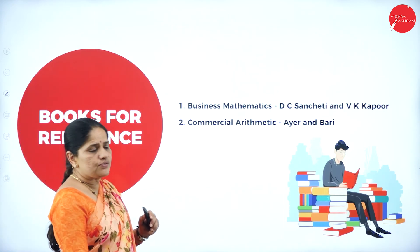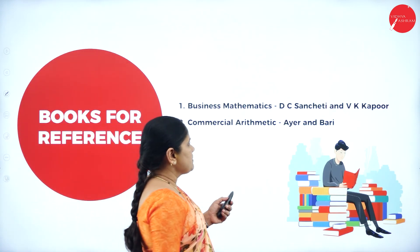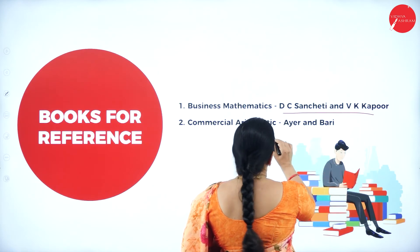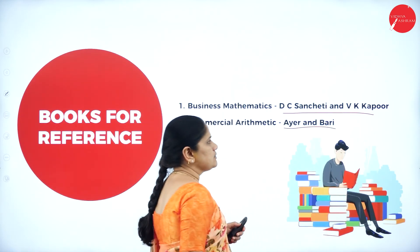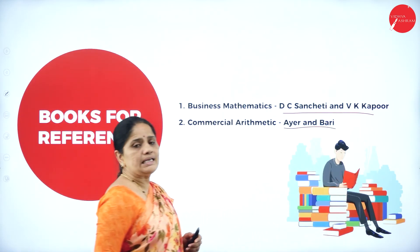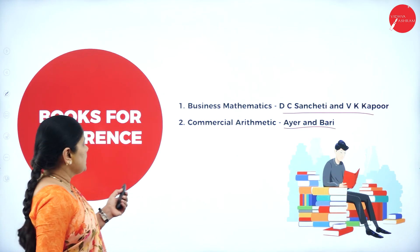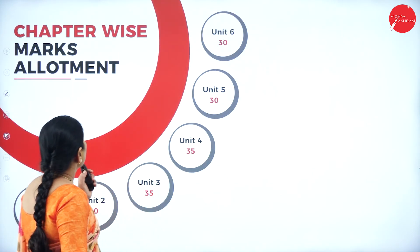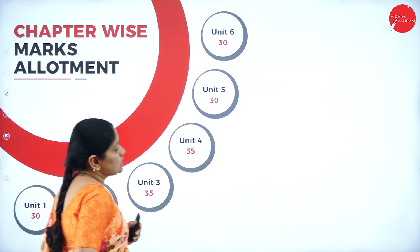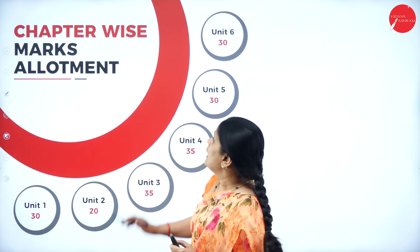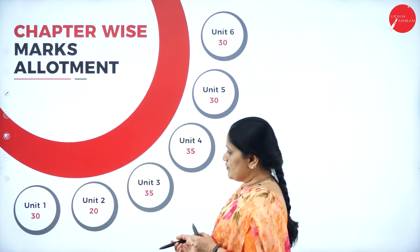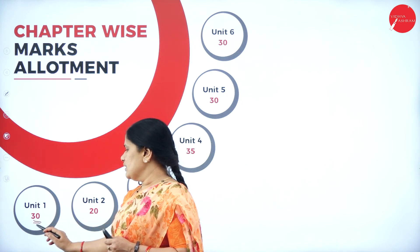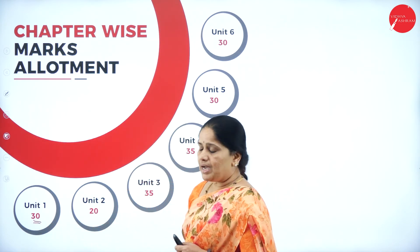Let us see what the books for reference are. Business Mathematics by D.C. Sanjiti and V.K. Kapoor, and Commercial Arithmetic by Hire and Barry. These are the various books you have to refer. Now let us look into the chapter-wise marks allotment. From unit 1, usually you get a maximum of 30 marks.